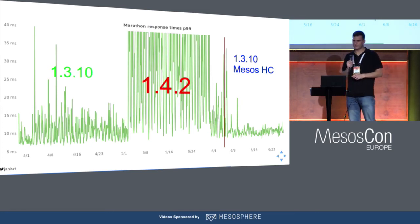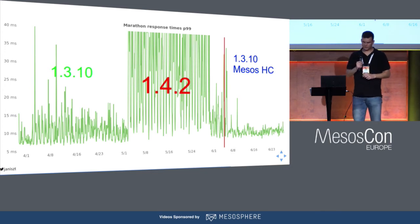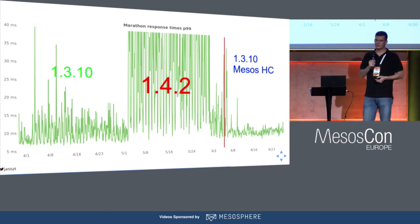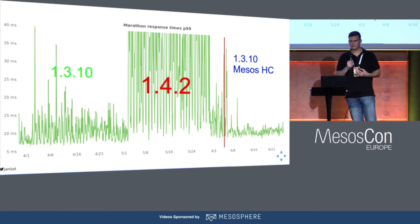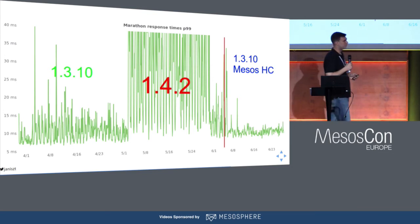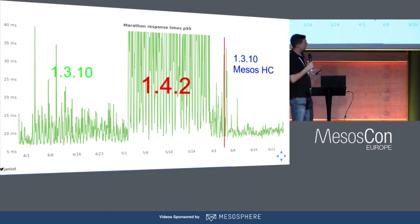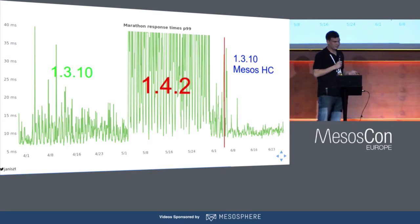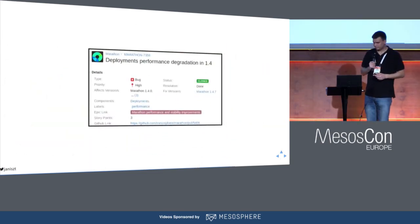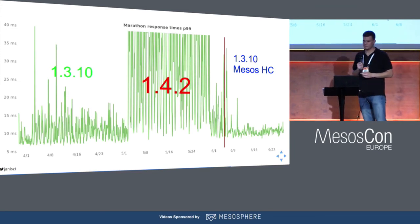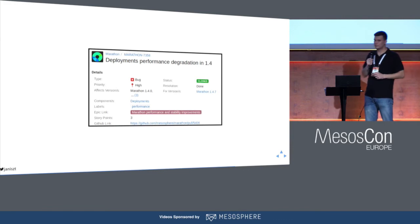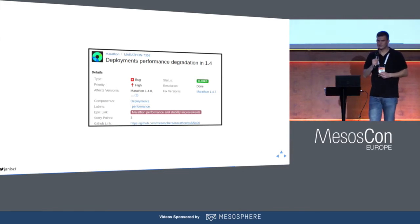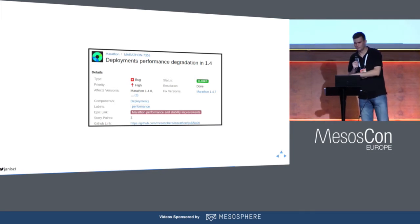Here is a comparison: we had Marathon 1.3.10 and a problem with health checks. We saw that 1.4 introduces Mesos native health checks, but after upgrading it was not working for us — there were constant timeouts and people could not deploy anything. Then we decided to port Mesos health checks from 1.4 to 1.3.10, and everything became more stable than before, with health checks passing again. The issue that started in Marathon 1.4 was finally resolved in 1.4.7. We haven't updated yet because we started on different topics I will cover later.